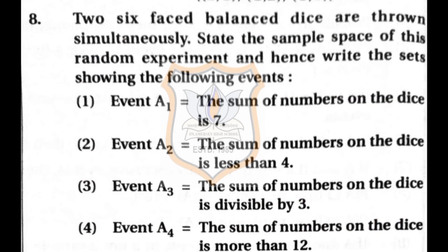Question 8: Two 6-faced balanced dice are thrown simultaneously. State the sample space and write the sets for the following events: the sum of numbers is 7; the sum is less than 4; the sum is divisible by 3; and the sum is more than 12.